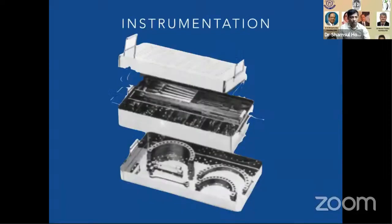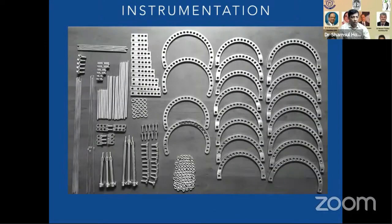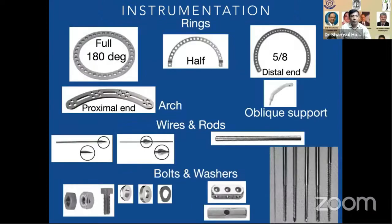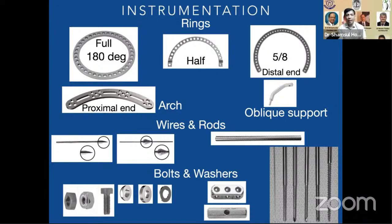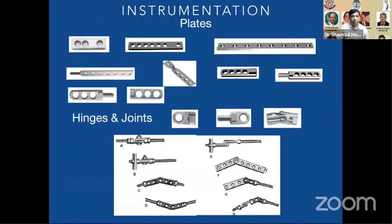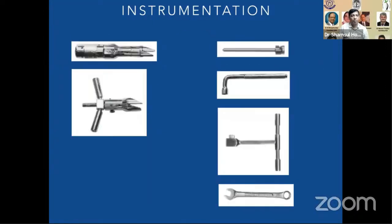Instrumentation has already been well described. This is the armamentarium you need in your OT for femur. For the middle part we use full rings — 162 to 200 rings. For the proximal part we use femoral arches, since we cannot apply a full ring there, and we can give oblique support. For the distal part, to keep knee movements free, we use 5/8 rings. There are different plates and hinges for assembly of the femoral frame, along with tension devices.